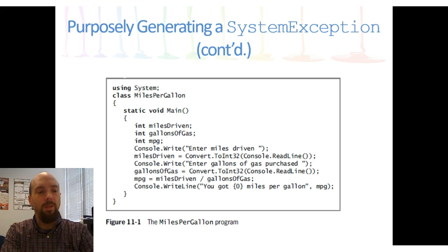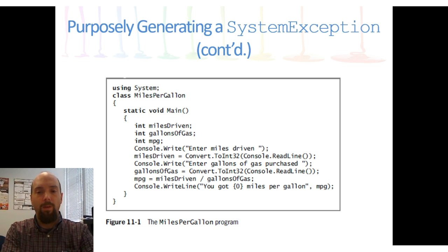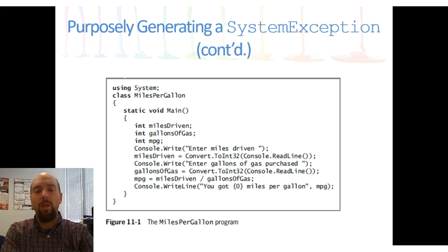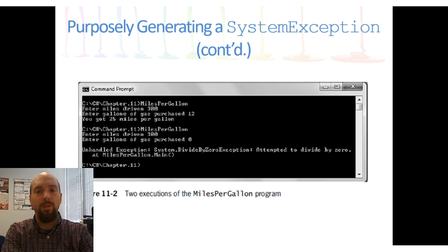Here we have a program asking the user to enter the miles they've driven, the number of gallons of gas, and then we calculate miles per gallon — which is simply miles divided by gallons. If the user doesn't enter anything for the number of gallons, or if they enter zero, we get an arithmetic error — a divide-by-zero exception. If they entered zero gallons of gas, we would get a System.DivideByZeroException, and it says 'attempted to divide by zero.'